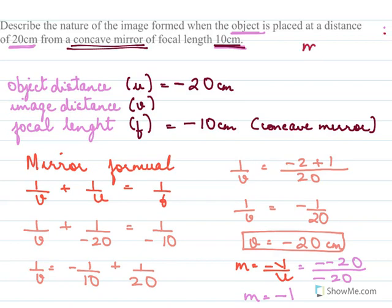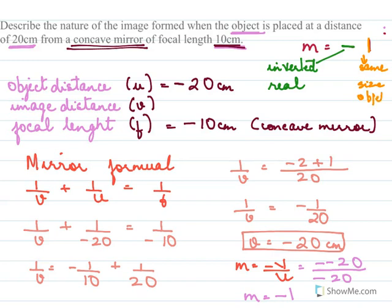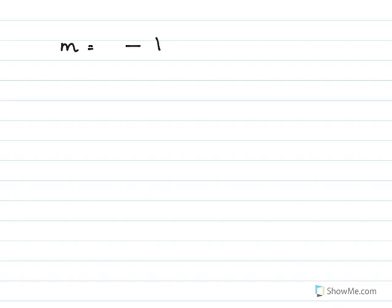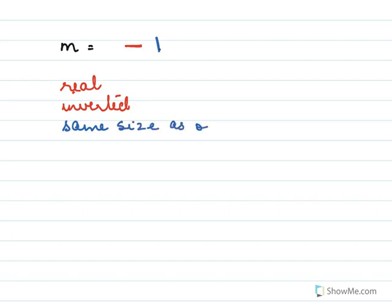Magnification m = −v/u = −(−20)/(−20) = −1. The negative sign means the image is inverted, therefore it is real. The magnitude 1 means it is the same size as the object. So magnification = −1 implies: real, inverted, same size as object.